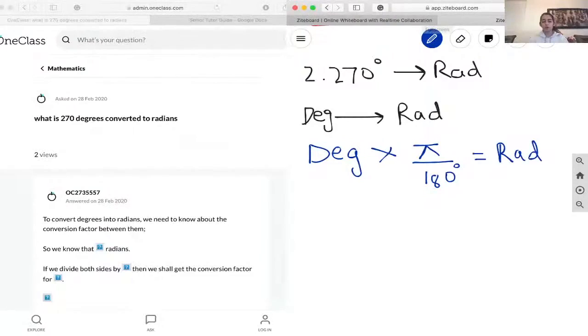If you want to turn from radian to degrees, you have to do the opposite. So you take the radian and times it by 180 degrees and divide that by pi. And there you get your degrees.